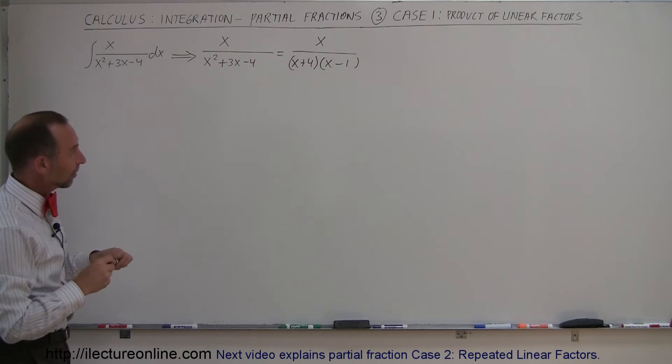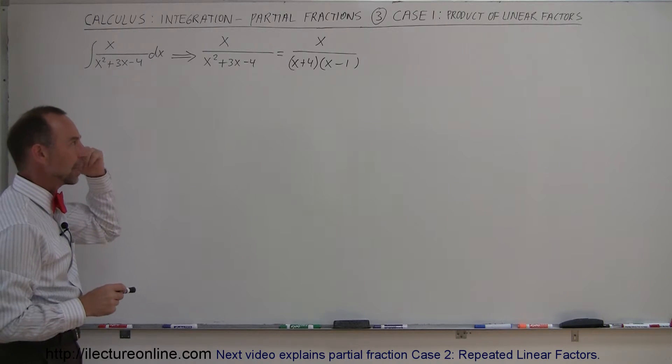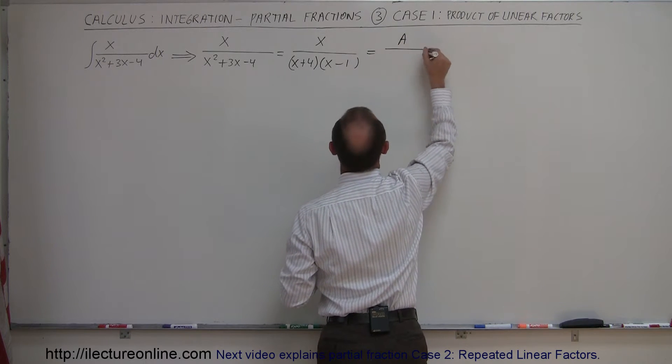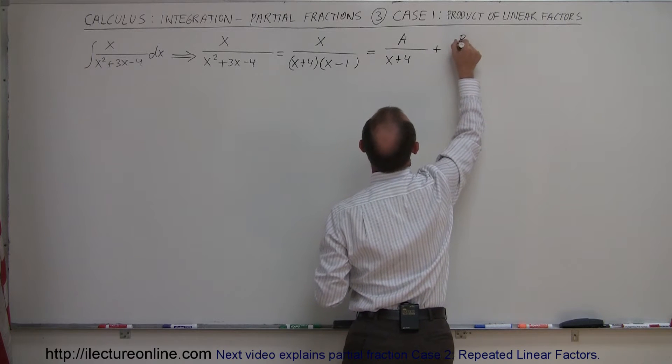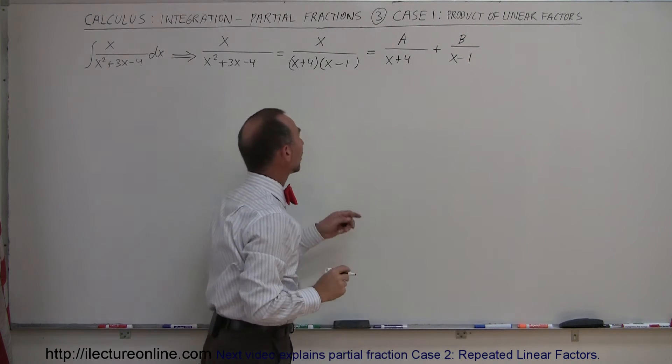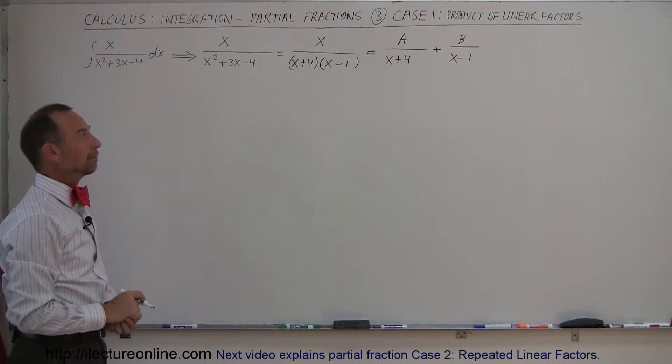All right, so now I recognize this as the denominator having a product of linear factors. And so the technique is, that means that I can write this as a constant A over the first factor, x plus 4, and the constant B over the second factor, x minus 1. Of course, they're added together like that. So if I can write this like that, then it's a lot easier to integrate and I don't have to worry about something like that.